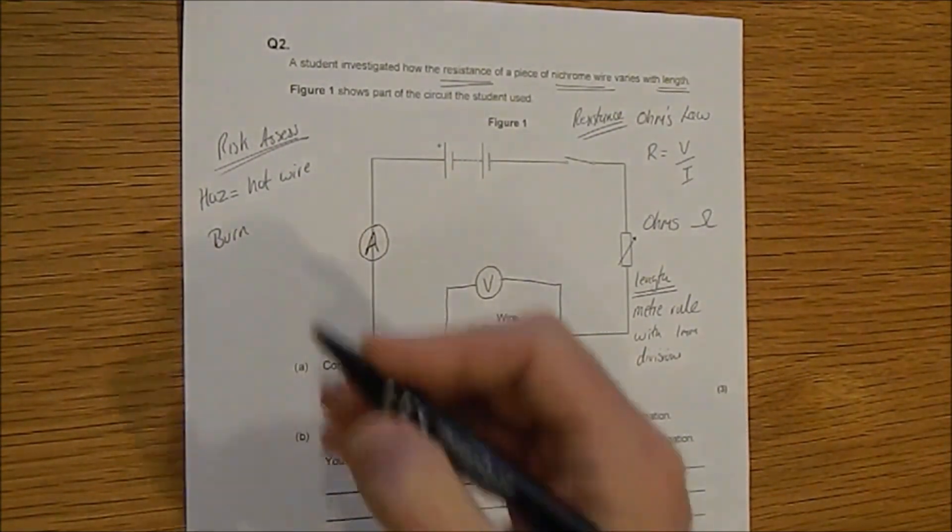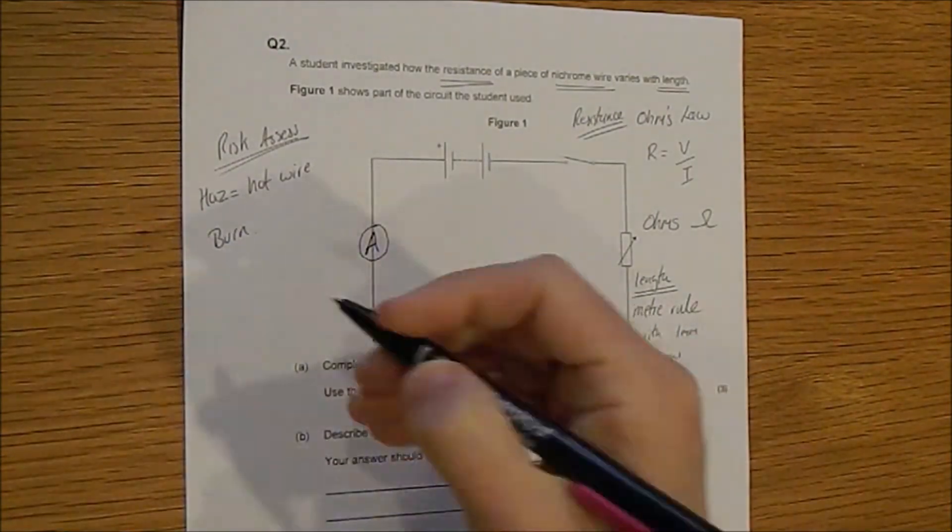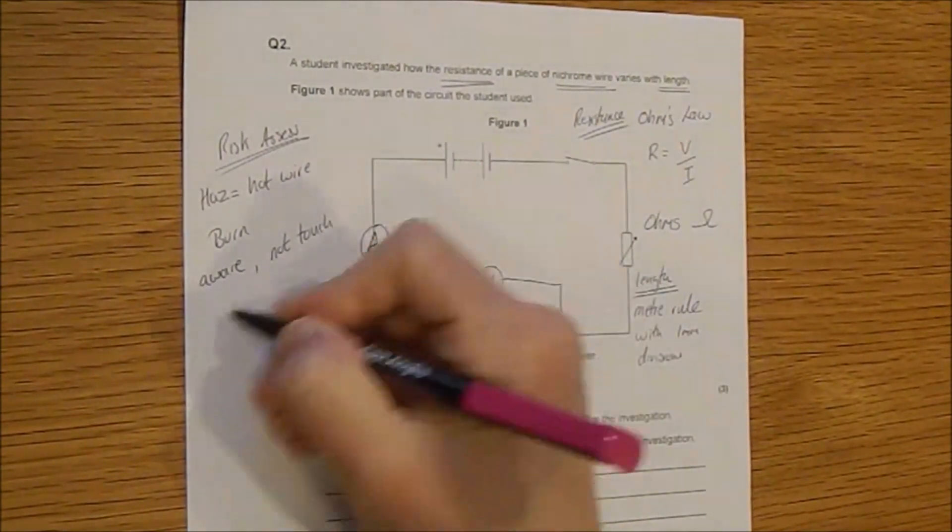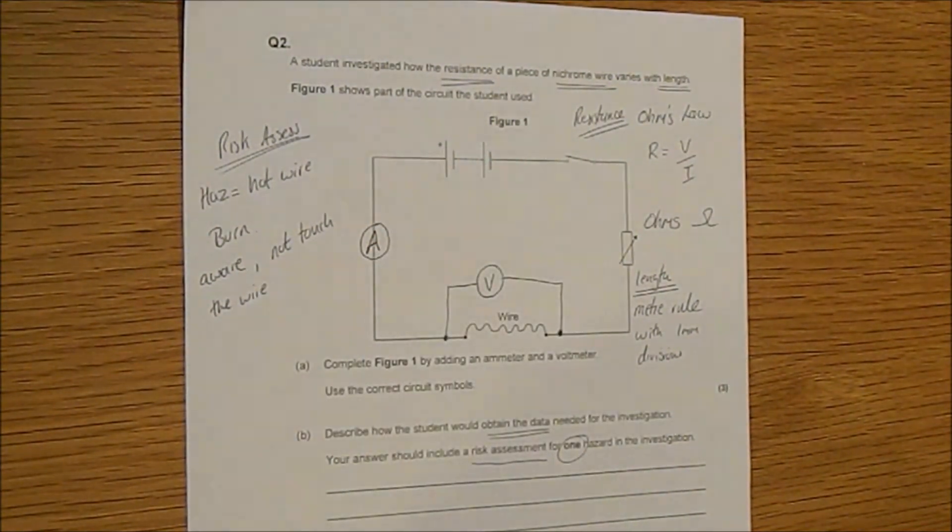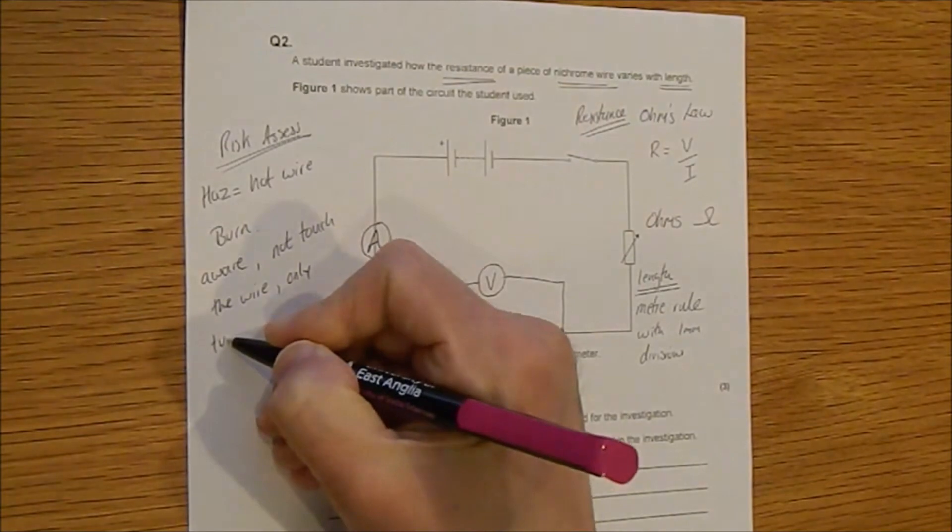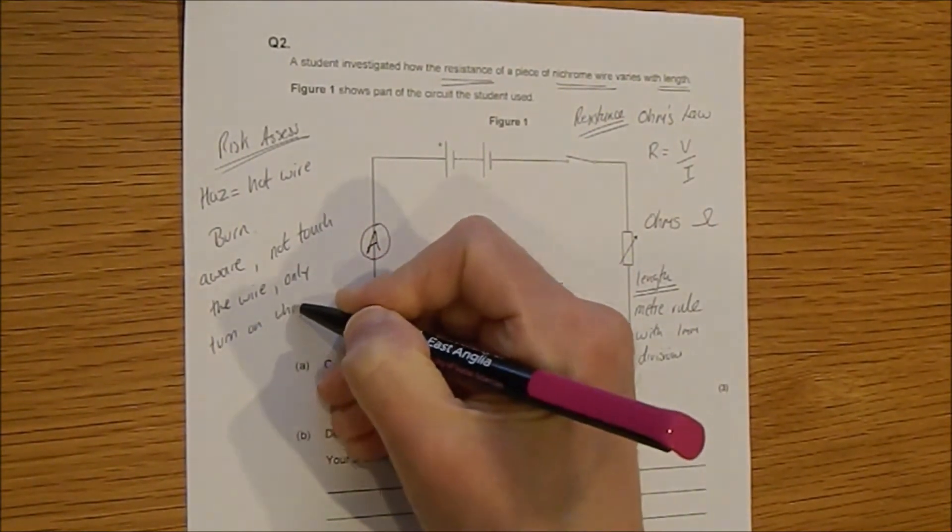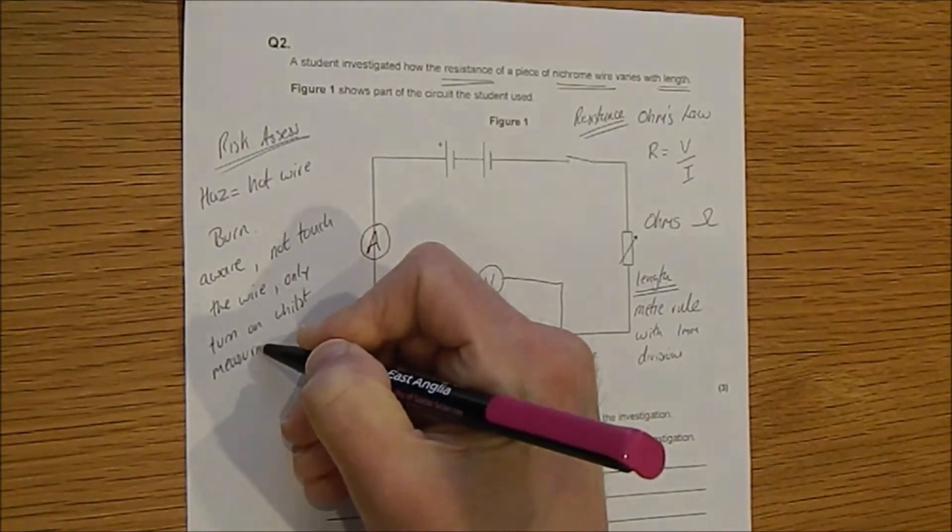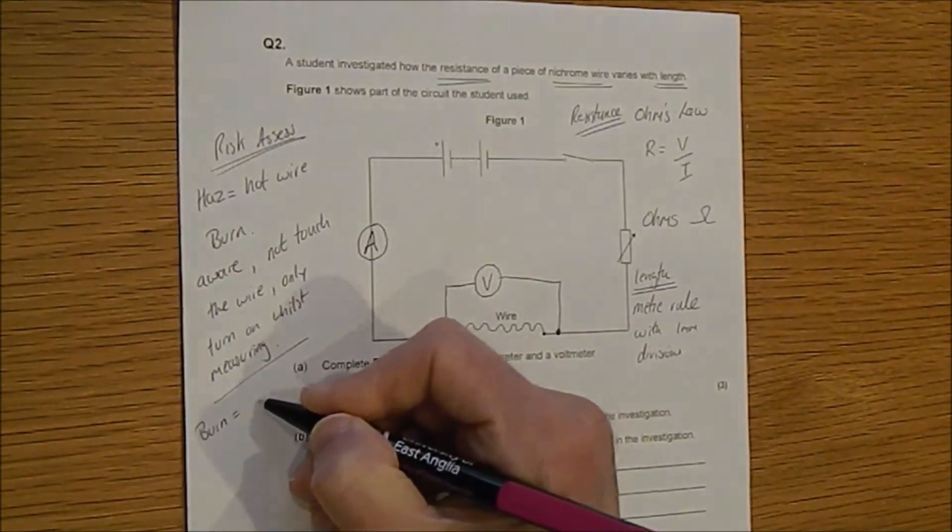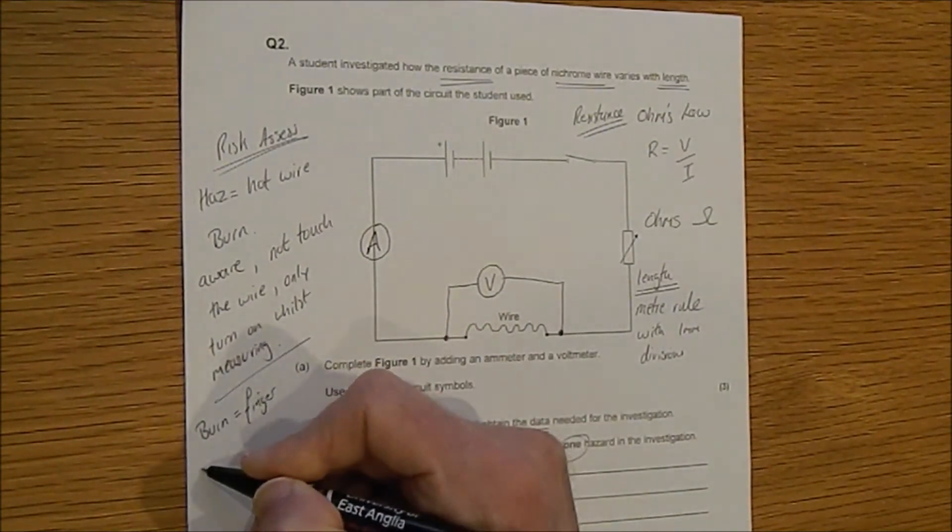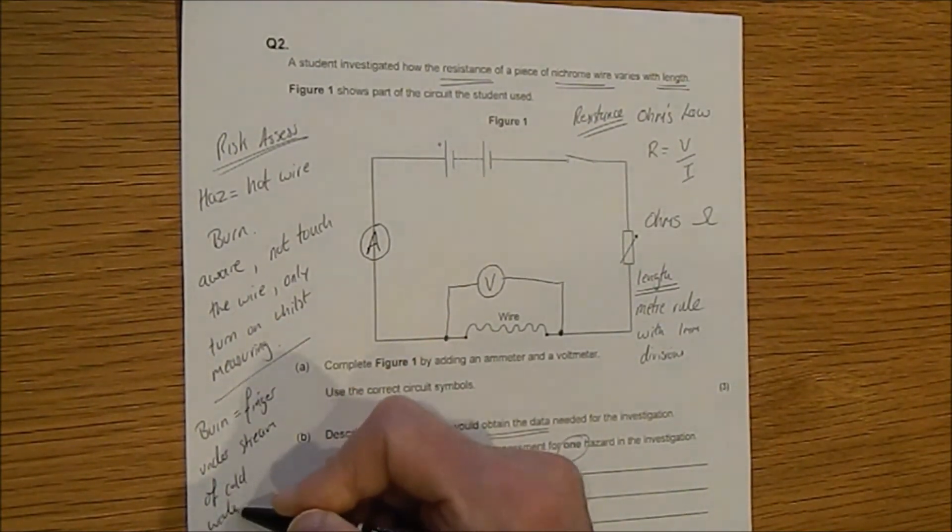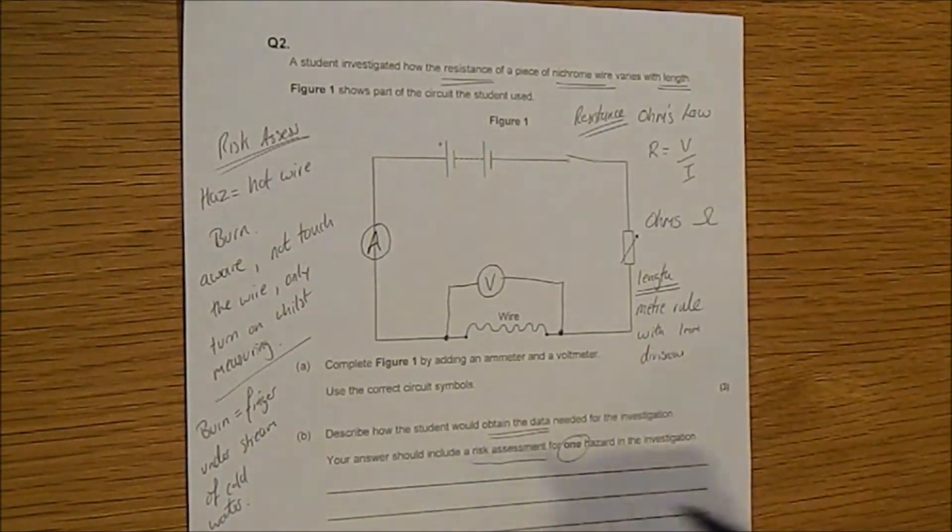And what are we going to do to minimise that risk? Well, we're going to be aware of it. And we're going to not touch the wire. And maybe we're going to only switch the circuit on whilst we take measurements. And what happens if we get a burn? We're going to put our finger under a stream of cold water. We've probably got enough there to be going on with and to get our six marks.